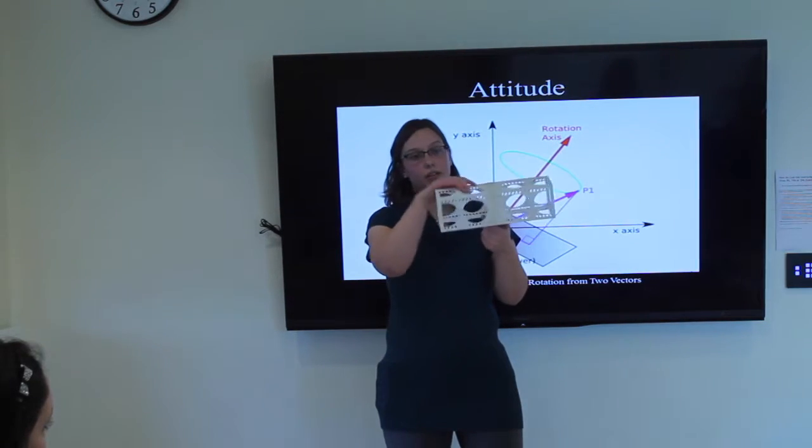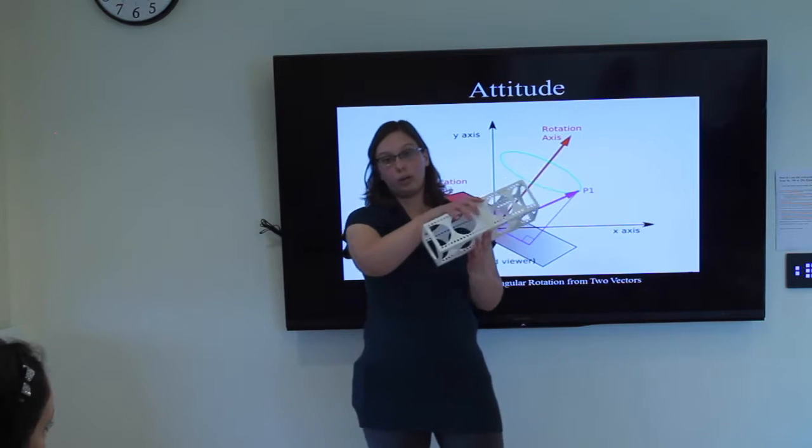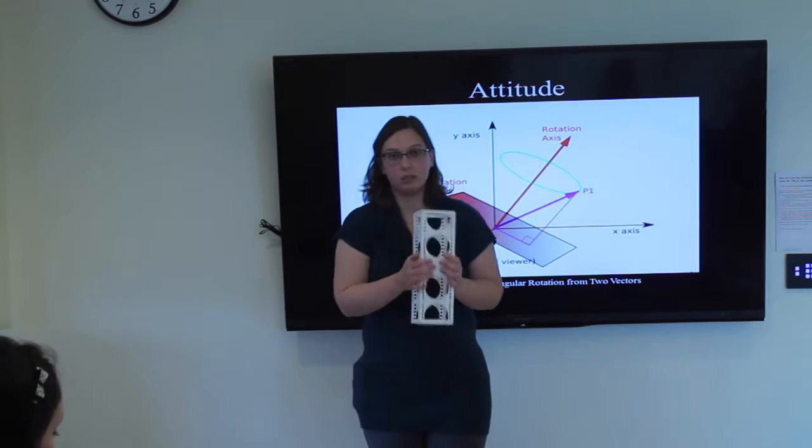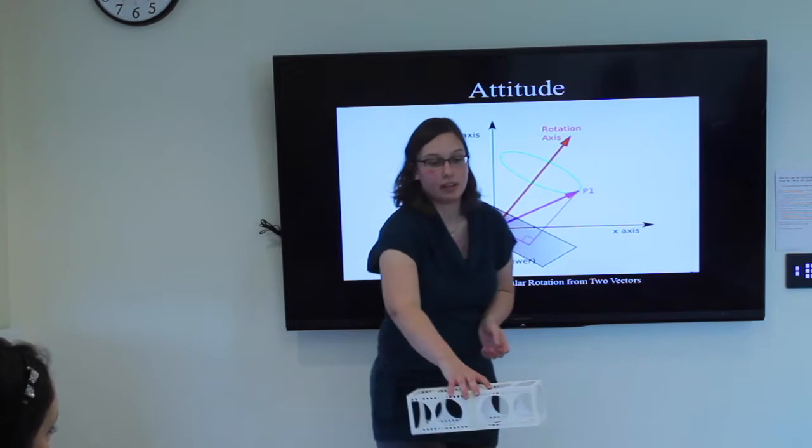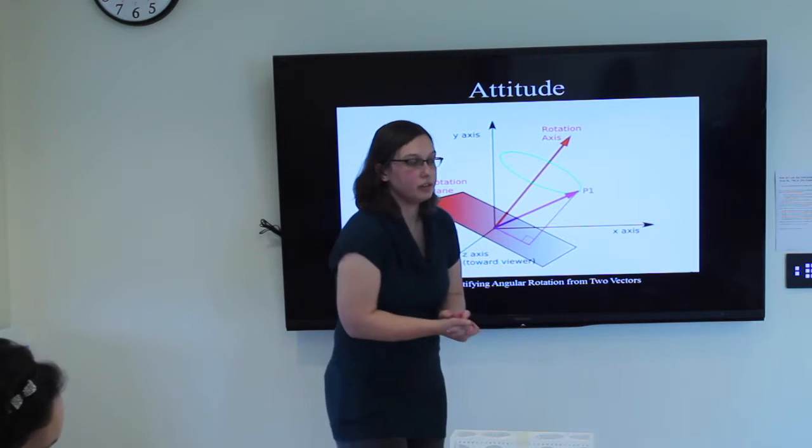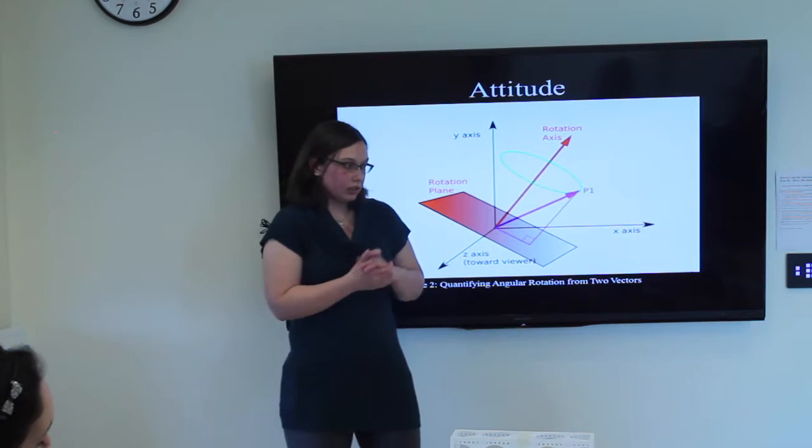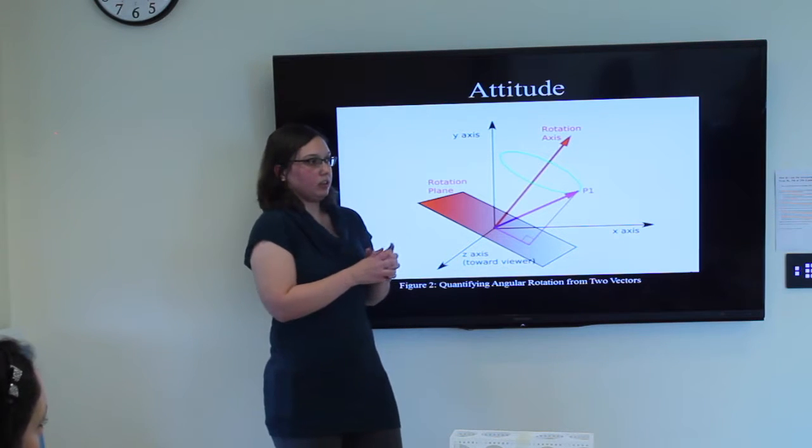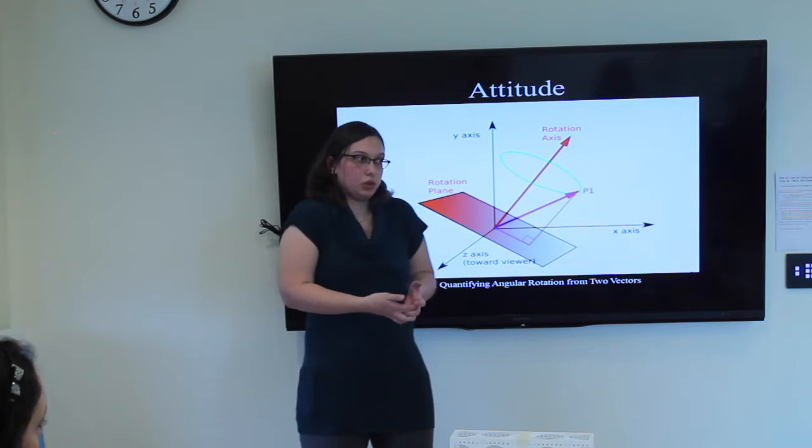It could be tumbling, or it could be tumbling about the yaw axis as well. We want to prevent that in order to make sure that systems do what they need to do when they need to do it. That is what attitude is, but we need to determine it and control it.